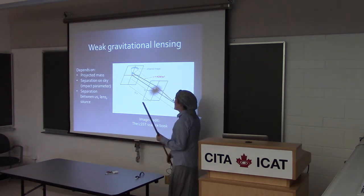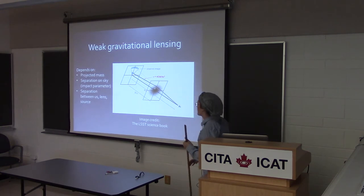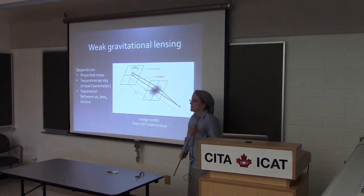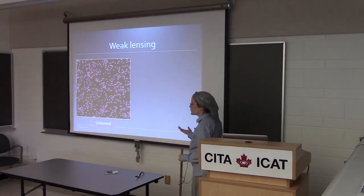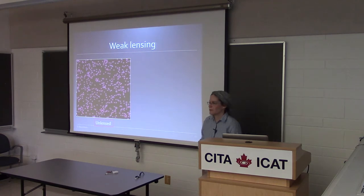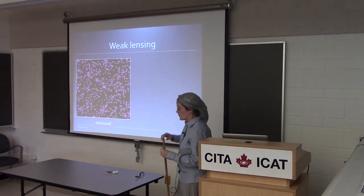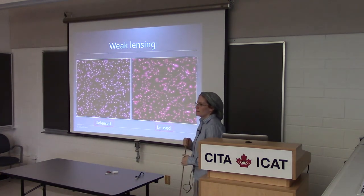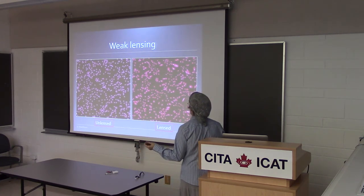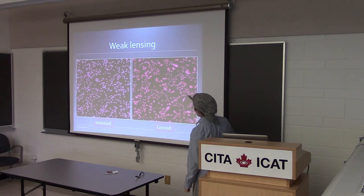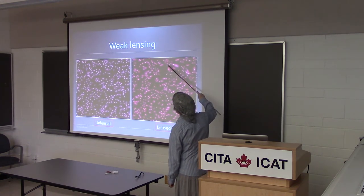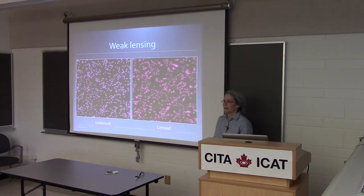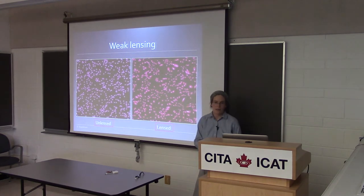The weak lensing effect depends on the amount of projected mass in the lenses, the separation on the sky between the lenses and sources, and the separation along the line of sight between us, the lens, and the source. If we had an idealized background of perfectly circular source objects and put a bunch of lenses in between, we'd get funny smeary patterns. Someone used to looking at weak lensing effects would say: there's a massive lens in front here because there's a tangential smearing around this point, and so on.